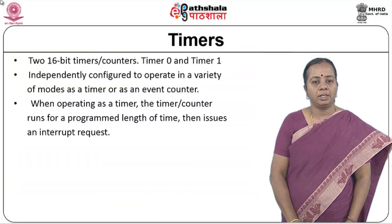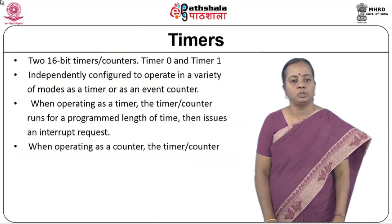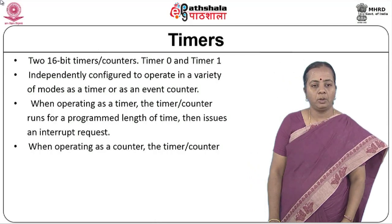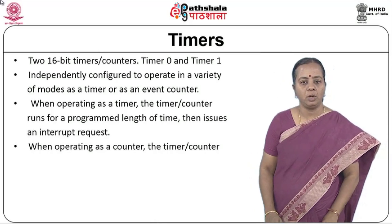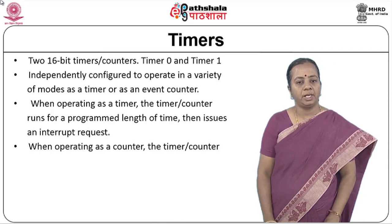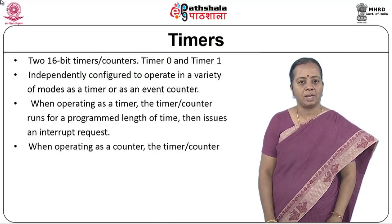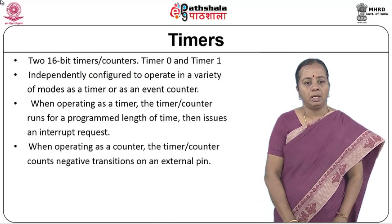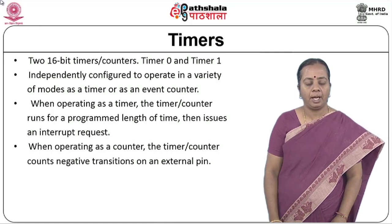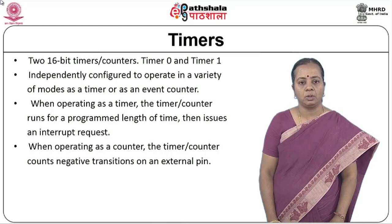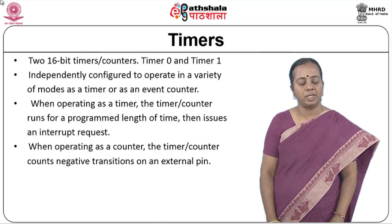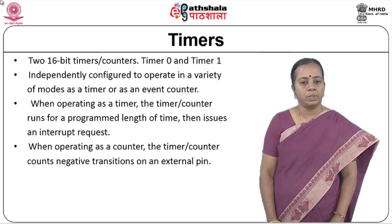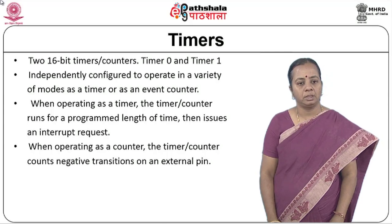When looking at 8051, we know that we have two 16-bit timers which can be used as counters also. These are called timer 0 and timer 1. They can be configured independently to operate in a variety of modes as timer or as counter. When operating as a counter, the C/T bit has to be set to 1; if it is a timer, it has to be set to 0. We need a control bit to identify whether it is a timer or counter.